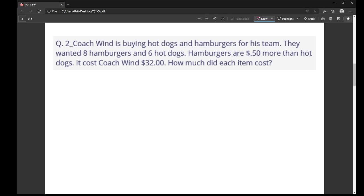For this problem, we have somebody named Coach Wind, and they are buying hot dogs for some kind of team, probably a sports team. So they wanted eight hamburgers and six hot dogs. It says that hamburgers cost 50 cents more than hot dogs, and it cost Coach Wind $32 to buy all of this stuff. So they want to know how much each item cost.